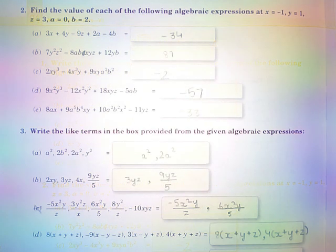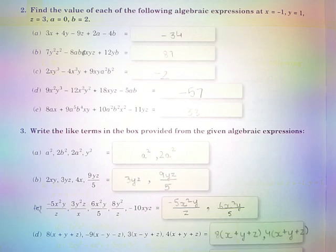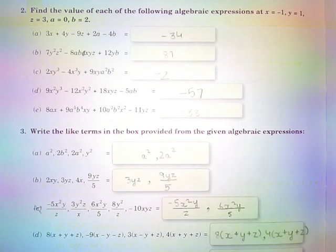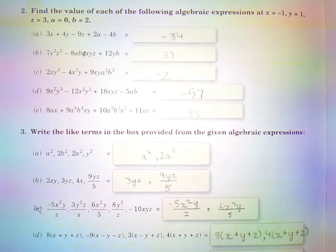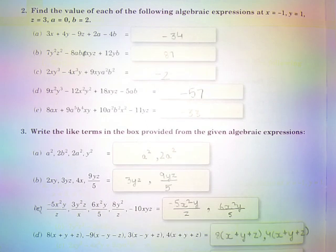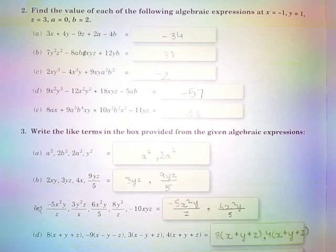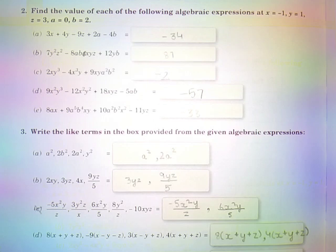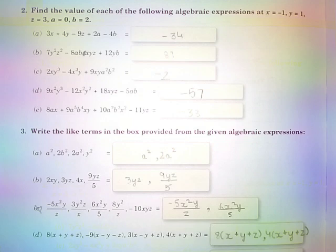Question number 2: Find the value of each of the following algebraic expressions, where x = −1, y = 1, z = 3, a = 0, and b = 2.